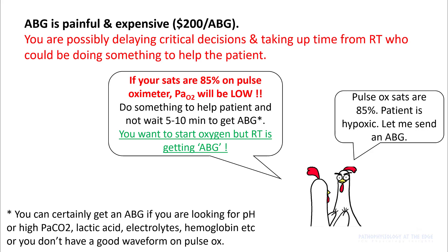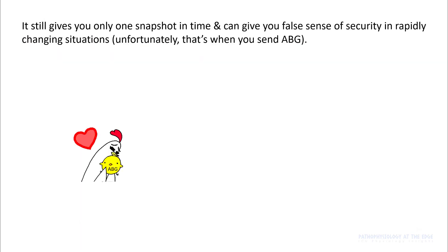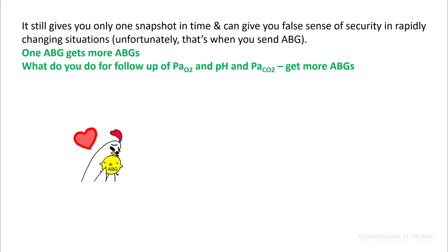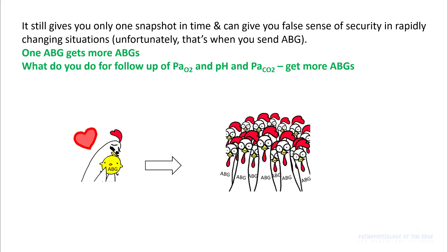I'm not saying to never get an ABG. If you don't have a good waveform on your pulse ox and you suspect the patient is hypoxemic, or you want to look at other things on ABG like pH, PaCO2, lactate, etc., go ahead and get one. ABG also only gives you a snapshot in time and can give you a false sense of security in rapidly changing situations — your patient's SaO2 can be much lower 5 minutes after that ABG was drawn. Also, one ABG often leads to more ABGs because there can be abnormalities you want to correct, and you want to follow up PaO2, pH, and PaCO2.